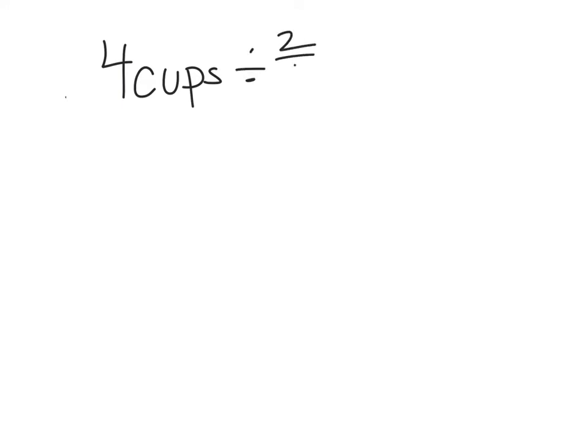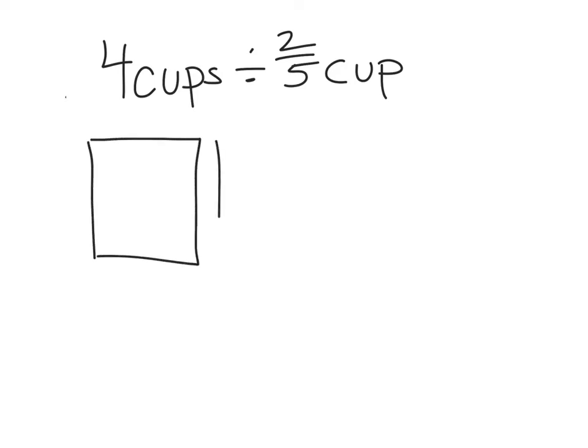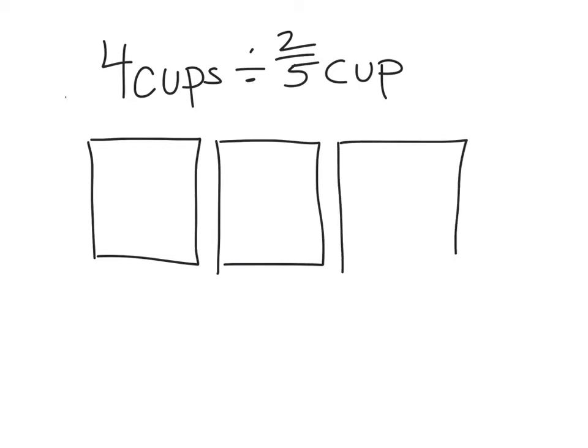For example, if I had 4 cups of lemonade and I wanted to divide it into pitchers of lemonade that use 2 fifths of a cup every time I make a pitcher, I want to know how many pitchers of lemonade I could make. To do this visually, I'm going to start with what I have — in this case, 4 cups — so I'm going to go ahead and draw out those 4 wholes.